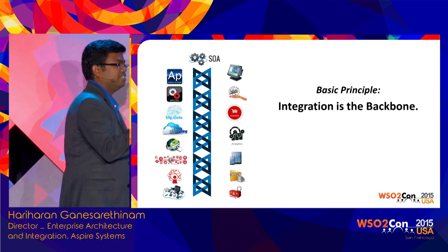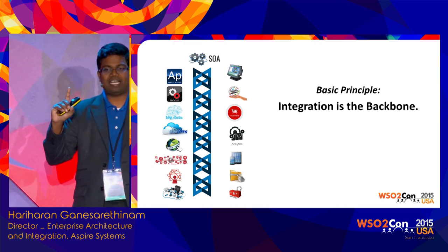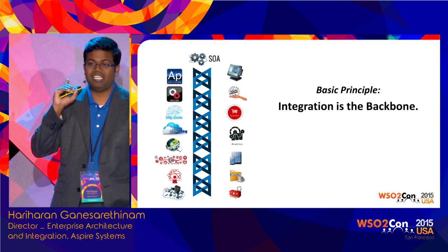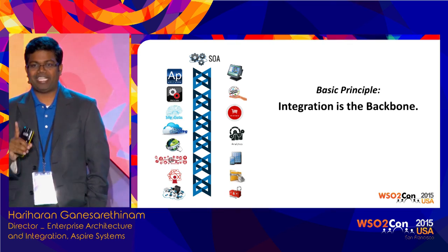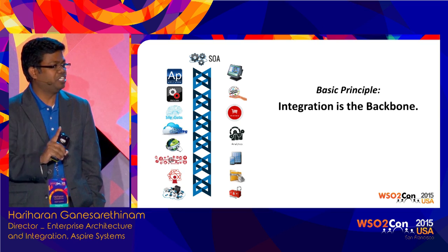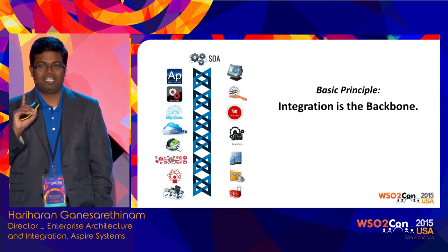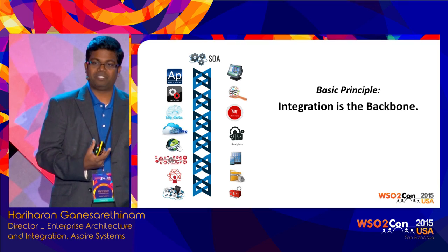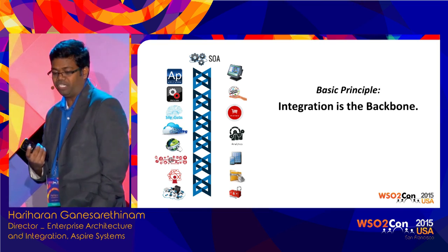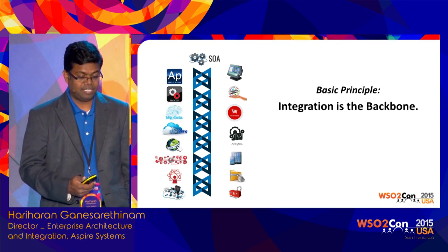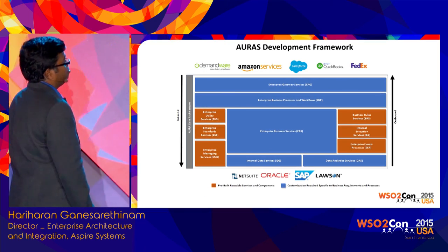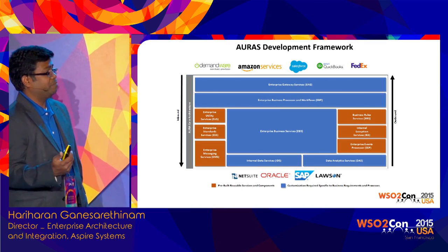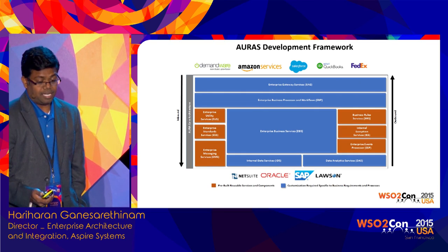We took one thing as a base: regardless of all architectural approaches and technology changes, the one common thing across all architecture models is integration. Without integration, without data movement across all different systems, new initiatives and architectures — nothing will function. Integration is the backbone. If we scale this up, tomorrow's architectural needs can be fulfilled with the same platform we are building. If it is a proven model, we can go with a service-oriented architecture and keep extending that to meet various demands.